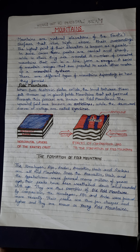In the given picture you can see the process and formation of fold mountains. The Himalayas, Alps, Andes, Aravalli, Ural, and Rockies are all fold mountains. Since the Aravalli, Ural, and Appalachian were formed many millions of years ago, their peaks have been weathered down and rounded with age. They are thus examples of old fold mountains.